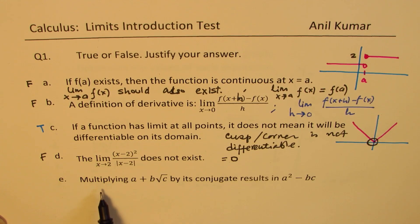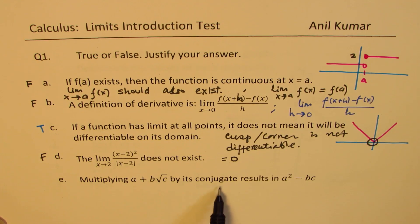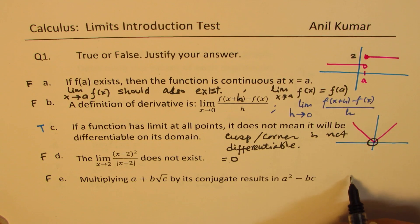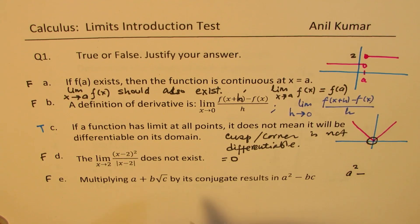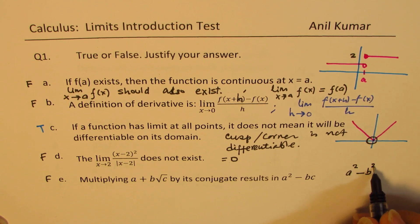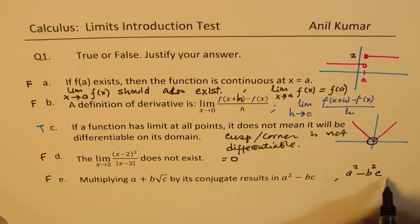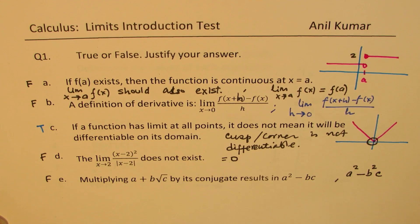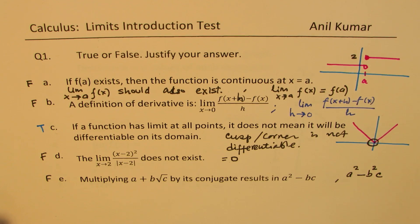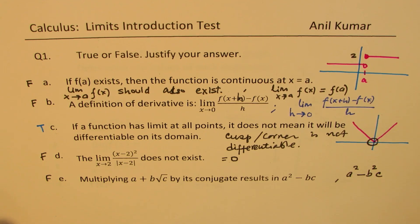E: Multiplying a plus b square root c by its conjugate results in a squared minus bc. This is also false. It results in a squared minus b squared c. So b squared c is going to be the result, not bc. These questions are designed to make you fall into the trap, but they are very important questions from the limits point of view.